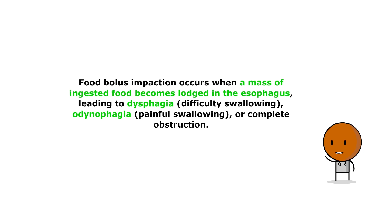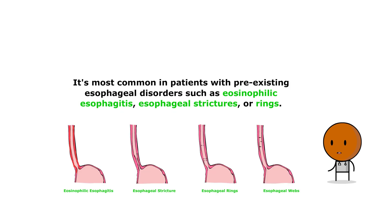This condition, characterized by the lodging of a food bolus in the esophagus, presents a unique challenge in diagnosis and management. Food bolus impaction occurs when a mass of ingested food becomes lodged in the esophagus, leading to dysphagia or difficulty swallowing, odynophagia or painful swallowing, or complete obstruction. It's most common in patients with pre-existing esophageal disorders, such as eosinophilic esophagitis or esophageal strictures or rings.